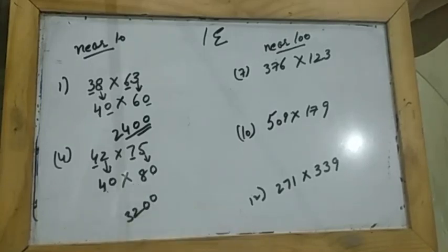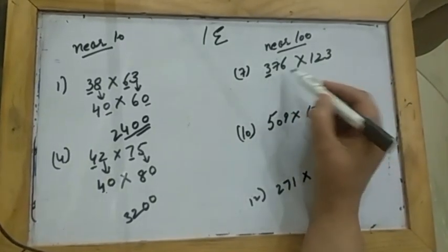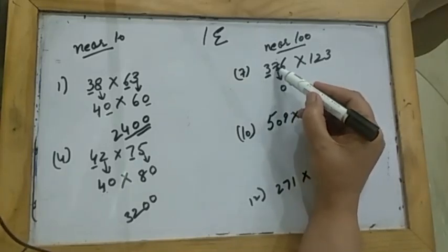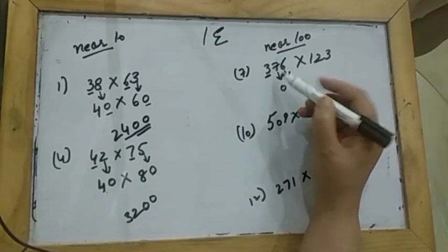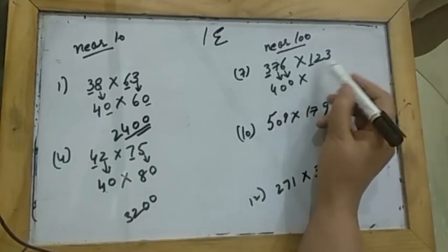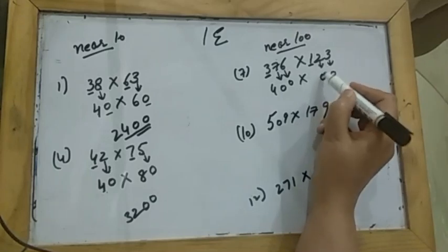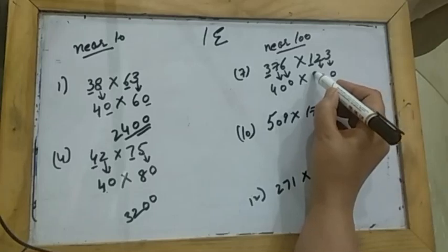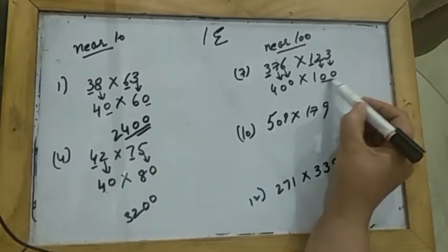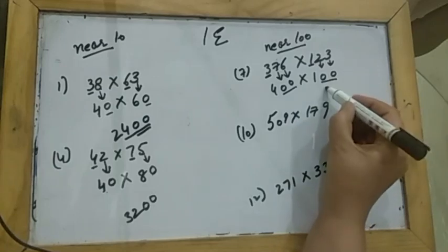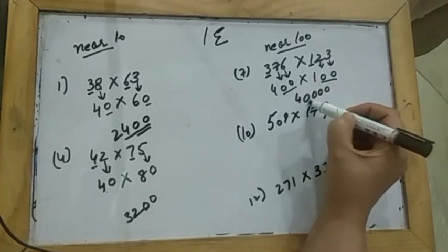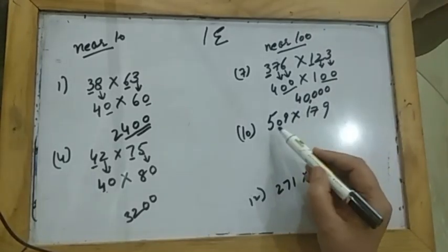Now these numbers I have to round off to the nearest 100. This is the 100th place, so these become 0. I look to the right of 3, which is 7 — more than 5 — so 3 becomes 4. To the right of 1 you have 2, which is less than 5, so 1 remains the same. When you multiply, you add four zeros and 4 ones are 4, so your answer is 40,000.